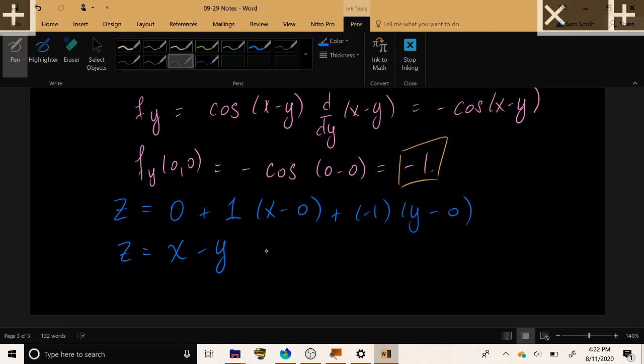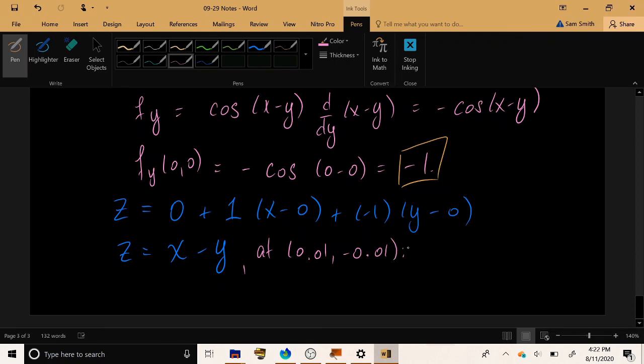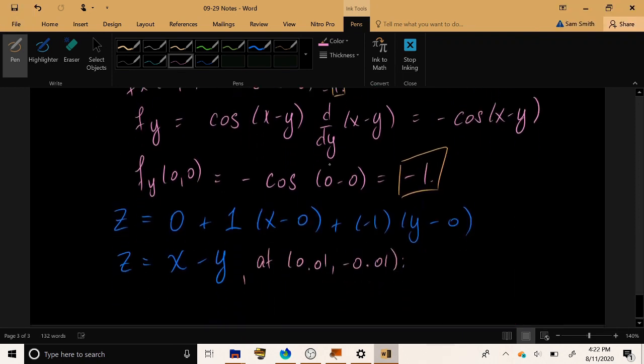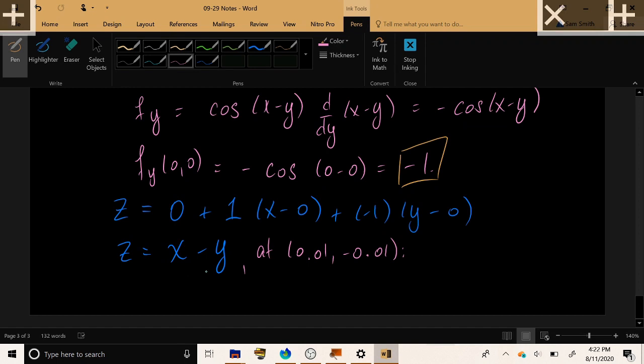So at the point 0.01 comma negative 0.01, let's estimate the function's value at that point as specified in the last part of the problem. And if I plug that in for x and y, the output will be approximately equal to 0.02 would be the estimate.